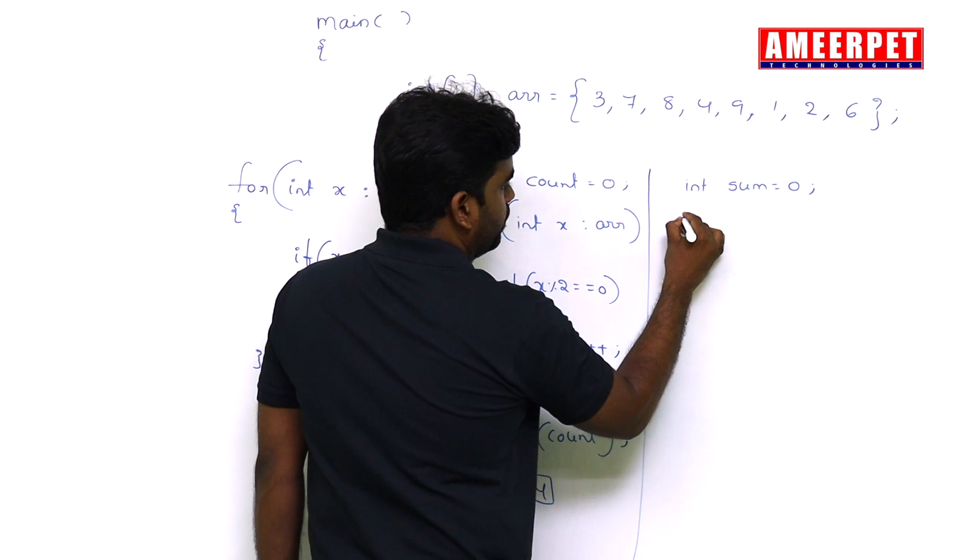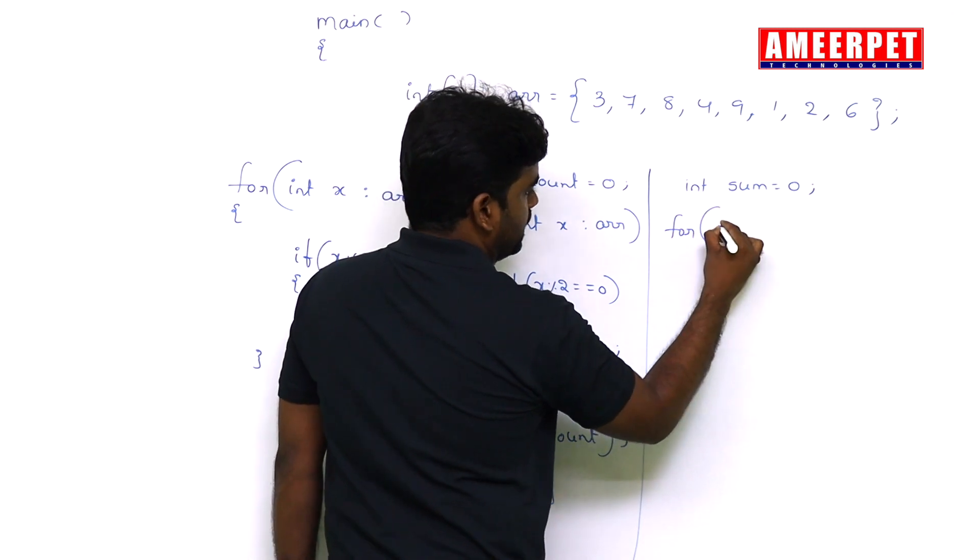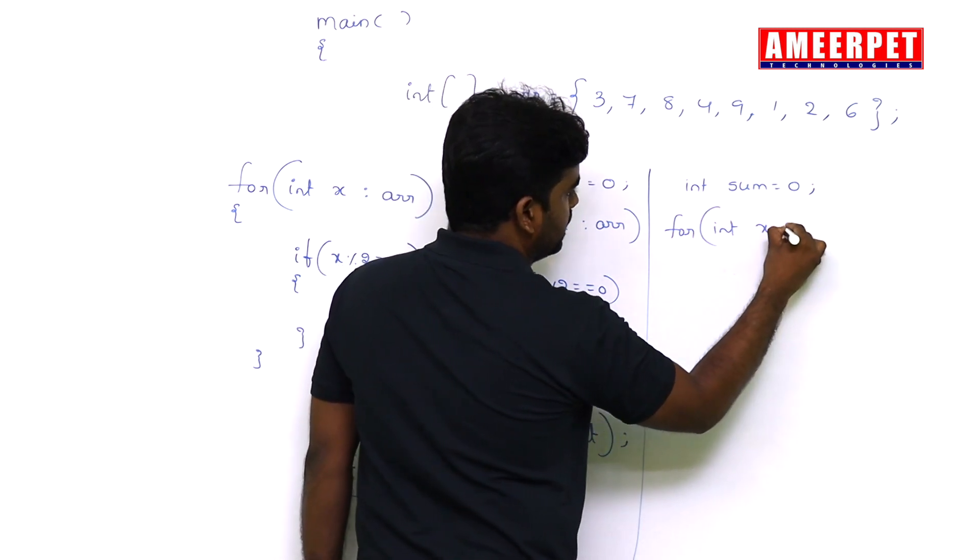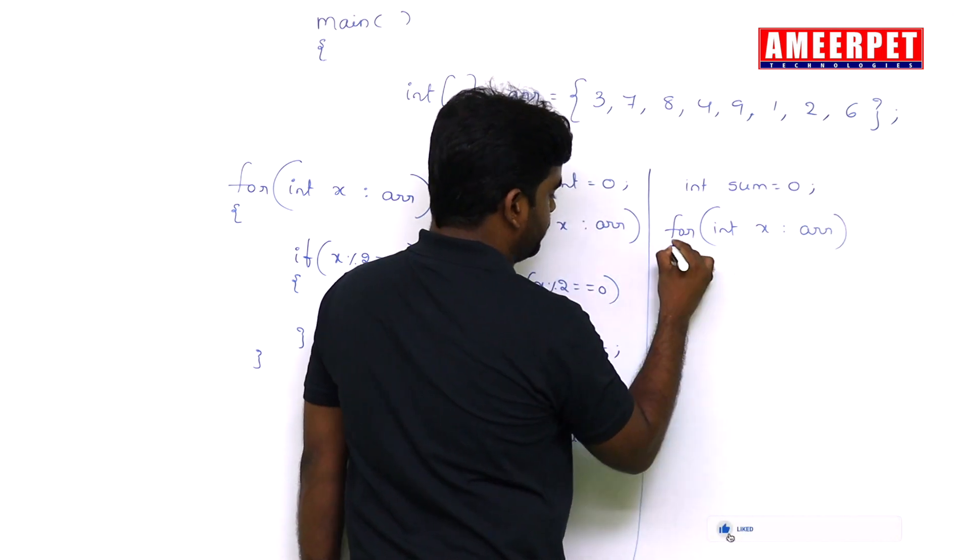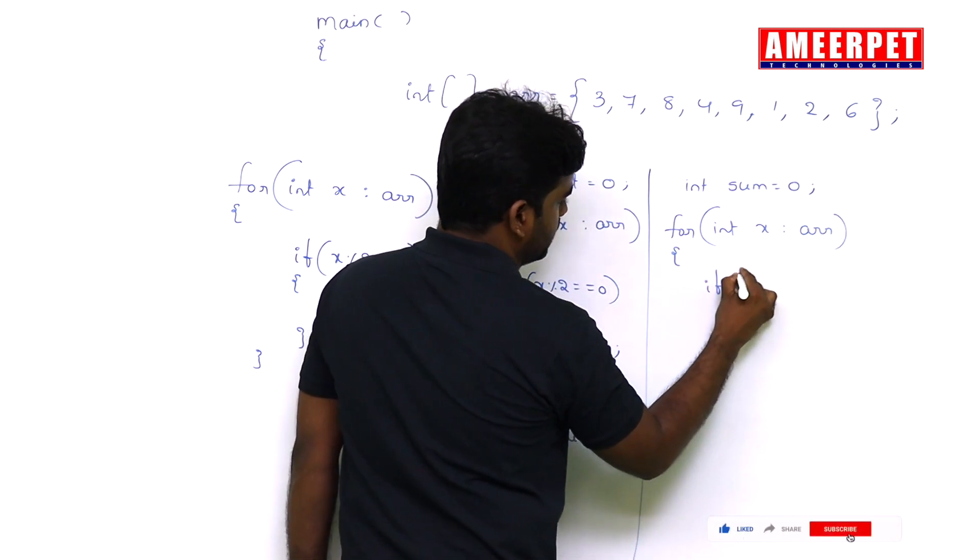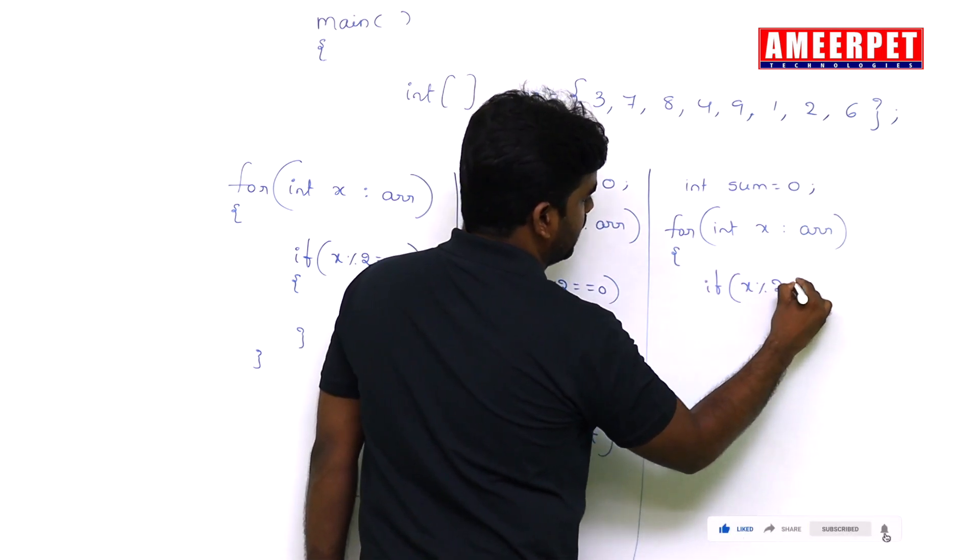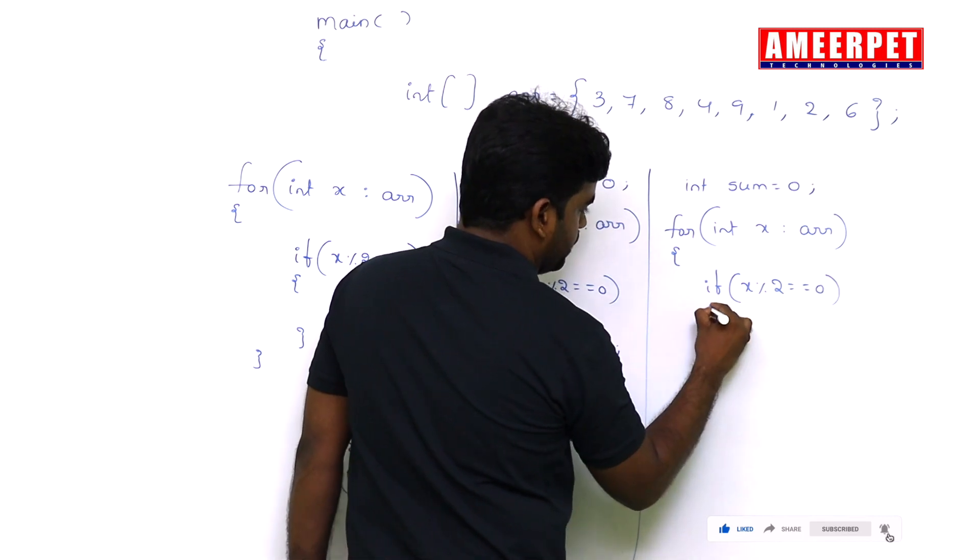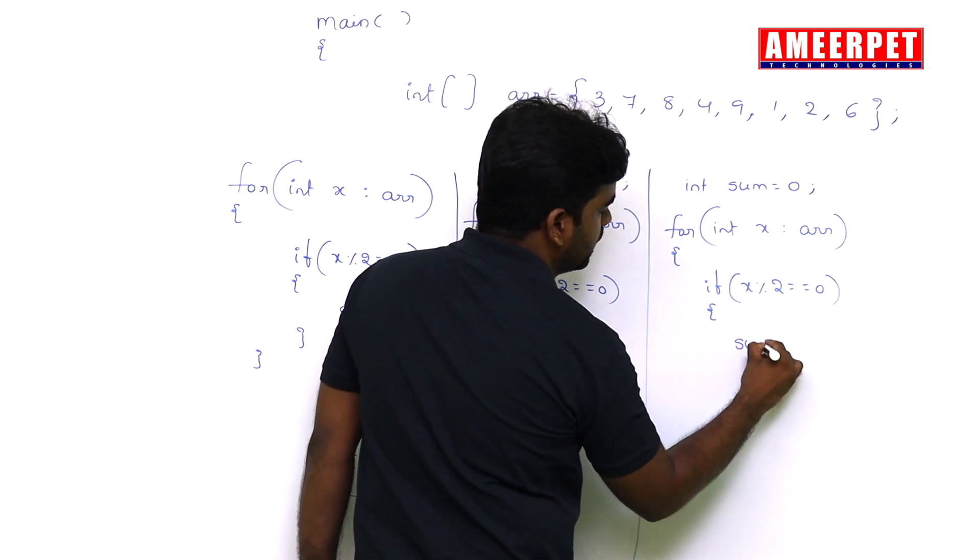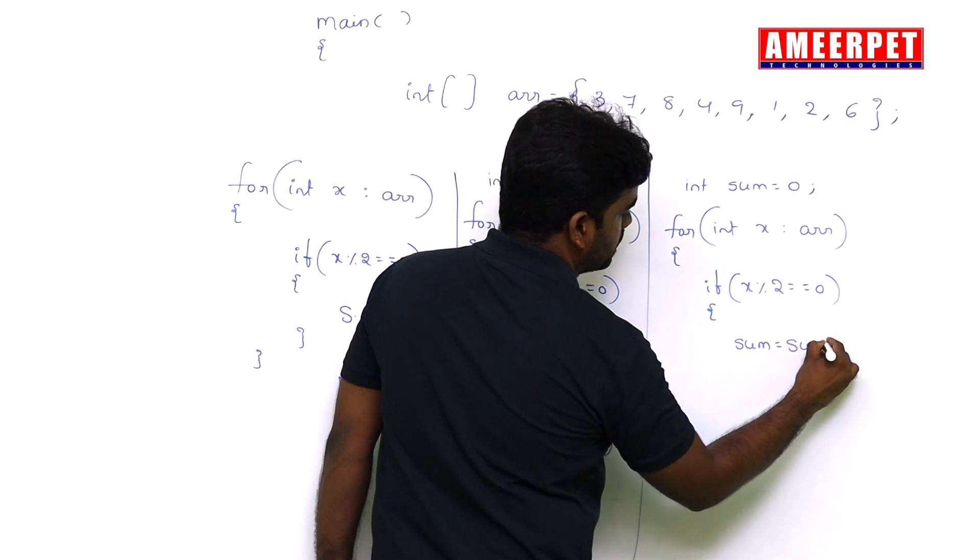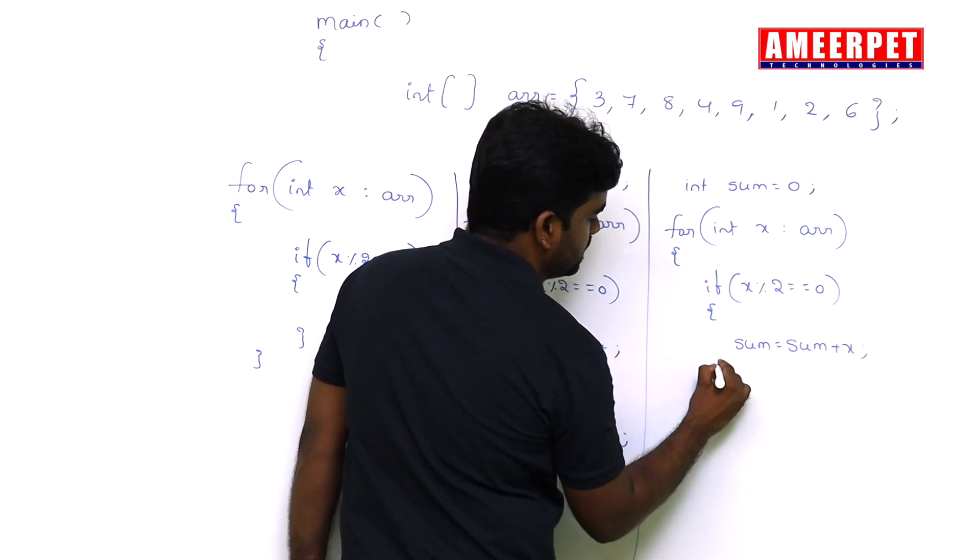Then here it is the for loop, same one. Integer, element by element we are accessing and checking if it is even number. Then add that element to the sum: sum equal to sum plus x.